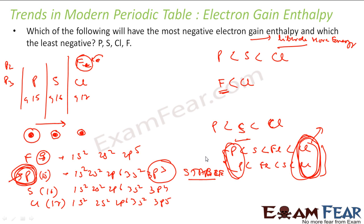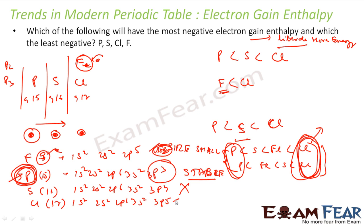Now for the maximum: the answer will be either fluorine or chlorine. In chlorine, the moment you add one electron it becomes stable, so it readily accepts an electron. In fluorine, the size is very small, so the extra electron gets repelled — small size means more repulsion. Chlorine has a decent size, so repulsion is less and it can readily accept an electron. Therefore, chlorine will have the maximum negative electron gain enthalpy.